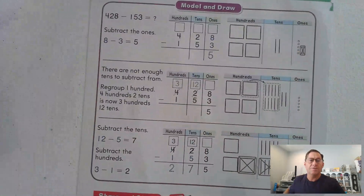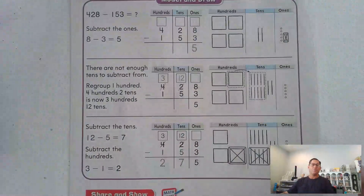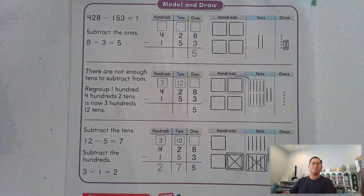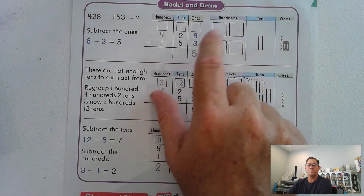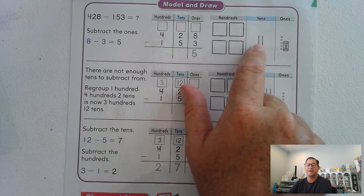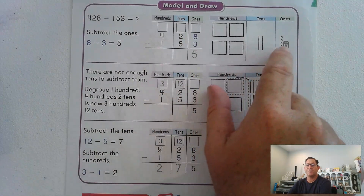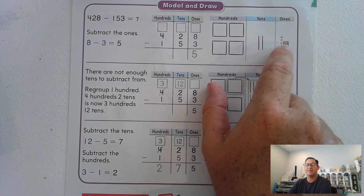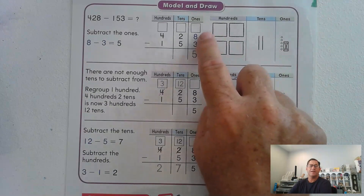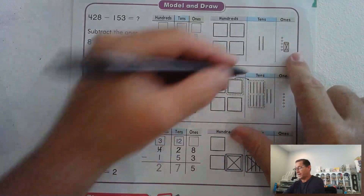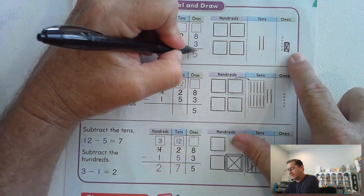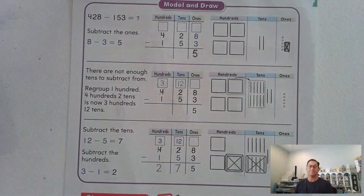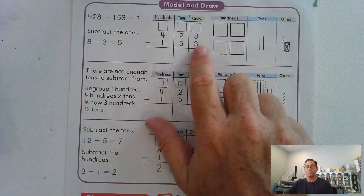In this problem we have to model and draw 428 minus 153. For 428, I see 4 hundreds, 2 tens to represent twenty, and 8 ones. Let's start at the ones and take away 3 — yes we can do that. They crossed out 3, leaving 5 ones, so they didn't have to regroup the ones.